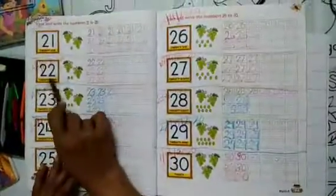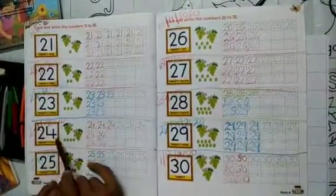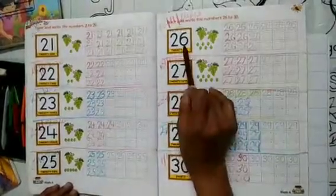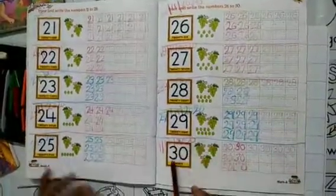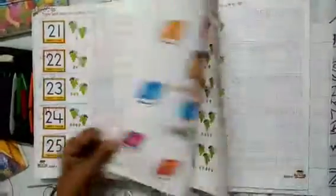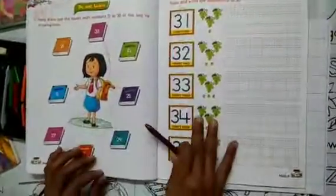Two, one, twenty-one. Two, two, twenty-two. Two, three, twenty-three. Two, four, twenty-four. Two, five, twenty-five. Two, six, twenty-six. Two, seven, twenty-seven. Two, eight, twenty-eight. Two, nine, twenty-nine. Thirty. I'll do this job. Okay, thank you.